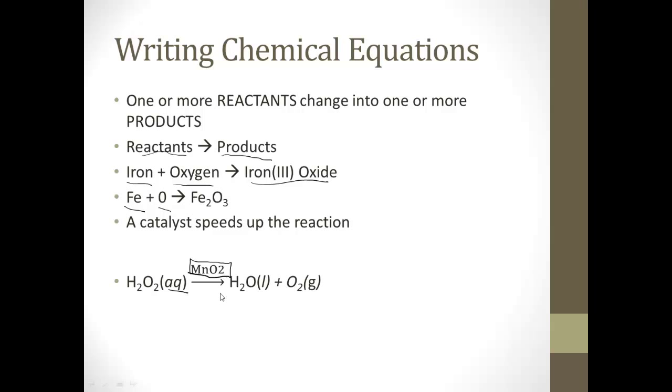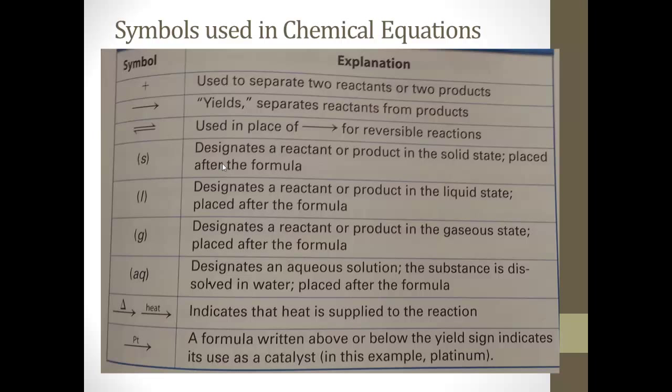All right, so what are all these extra things that we haven't really dealt with yet? Well, here's a guide to what they all are. The plus is usually separating the two reactants or the products, right? If you have H2 plus O2, it's going to make some amount of water. The arrow, it's not an equals, it's a yields. These two reactants yield this product.